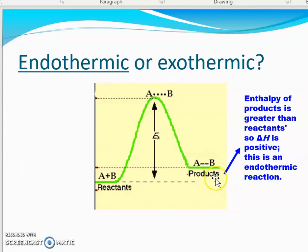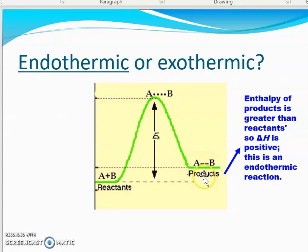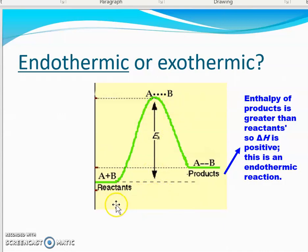In this case, the enthalpy of the products is greater than the reactants, so Delta H would be positive — this is endothermic. The interesting thing about thermodynamics is that it really only cares about where you start and where you end. Anything that happens in the middle is the job of kinetics, which we will study in AP Chemistry. So when looking at whether a reaction is endothermic or exothermic, we are just looking at products and reactants, not what's going on in between.